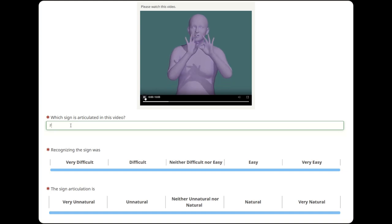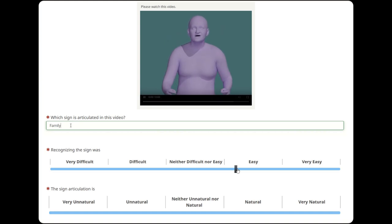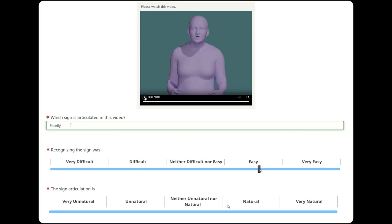Each participant types the sign they believe the avatar or the real human is signing. They then rate how easy it was to recognize the sign. Finally, they rate how natural the articulation seems.